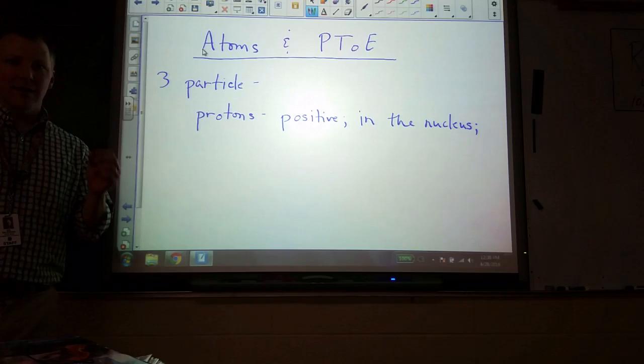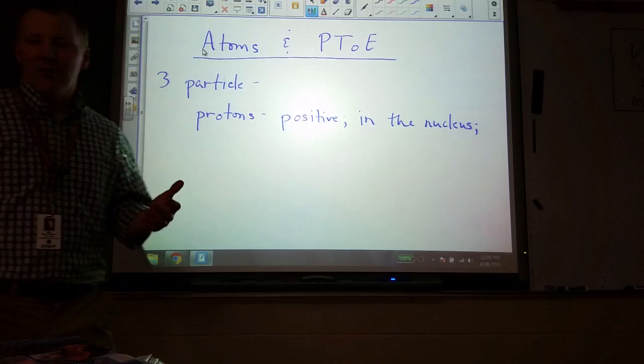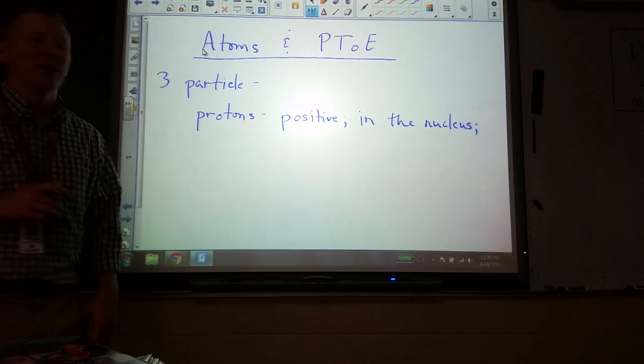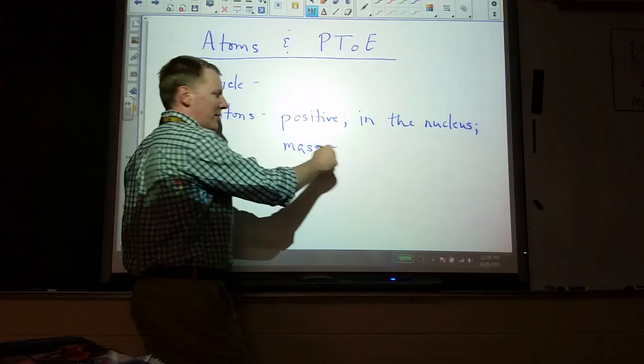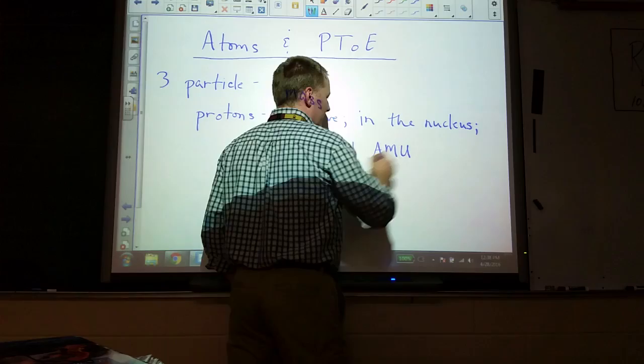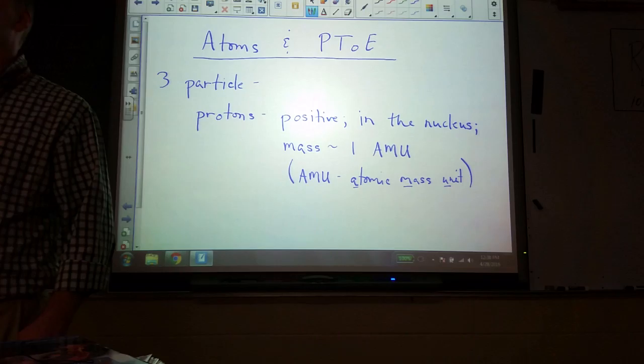Since they are so small — almost inconceivably small — we don't use grams or kilograms. We can find their mass in grams and kilograms, but they're such tiny numbers that we don't often use it. Instead, we use a new unit. The mass of a proton is very close to — approximately — one AMU, atomic mass unit. Just a new unit that's really convenient to use when we're talking about atoms.